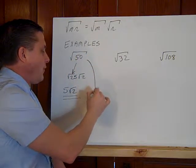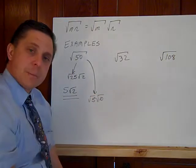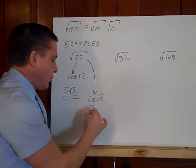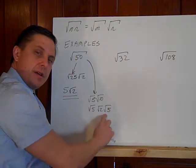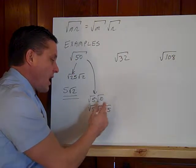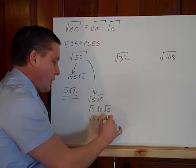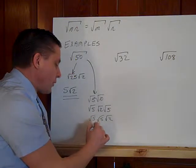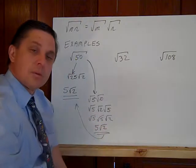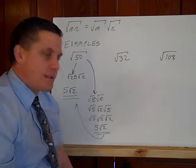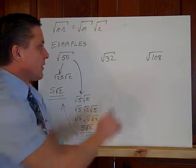But what if you didn't think of that? What if you thought of five times ten? Well, that's fine. It just means you're going to have to do a little more work. Then break the ten down into two and five. Again, check it as you go on your calculator. I'll flip these two because I can multiply in any order. And I know square root of five, square root of five make the whole number five. Same answer. It does help if we use the perfect squares.